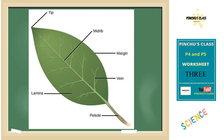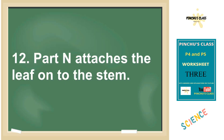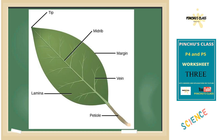Number eleven: that part shown in the diagram of a leaf is known as the midrib — you can see it in the diagram. Number twelve: the function of part N is that it attaches the leaf onto the stem; without that part, the leaf wouldn't be on the stem.